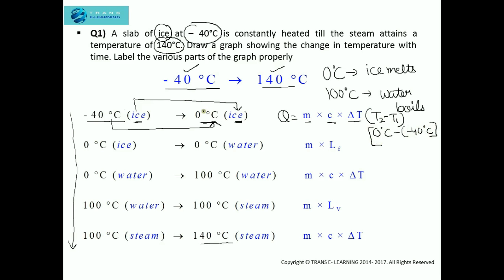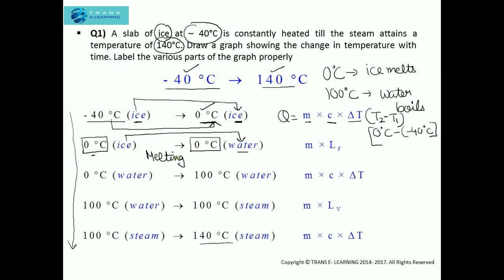After attaining the temperature of 0 degree Celsius, on further heating the ice will gain heat and it will melt into water. The ice is at 0 degree Celsius and on melting the temperature is still 0 degree Celsius — there is no change in temperature. This process of changing a solid into liquid on absorbing heat is known as melting. Since only the state is changing, the heat absorbed is M into LF, where LF represents the latent heat of fusion.